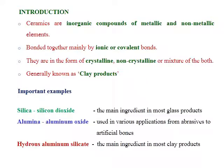First we go through a simple introduction about ceramics, its types, and some glimpses of their applications. Ceramics are inorganic compounds of metallic and non-metallic elements, bonded together mainly by ionic or covalent bonds. They may form crystalline or non-crystalline structures, or a mixture of both forms, and are generally known as clay products. Important examples include silica (silicon dioxide), the main ingredient in most glass products; alumina (aluminium oxide), used in applications from abrasives to artificial bowls; and hydrous aluminium silicate, the main ingredient in most clay products.